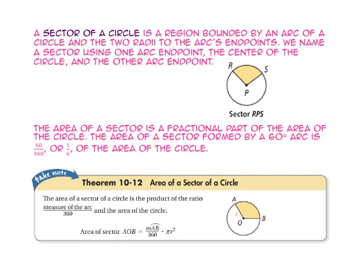The area of a sector is a fractional part of the area of the circle. For example, a sector formed by a 60-degree arc is 60 out of 360 degrees, or one-sixth of the area of the circle. To find the area of a sector, we take the ratio of the arc measure to 360 times the whole area of the circle.